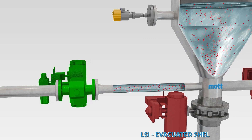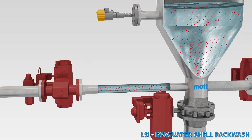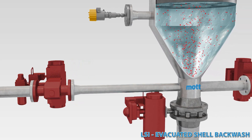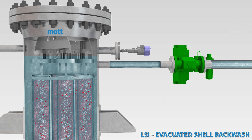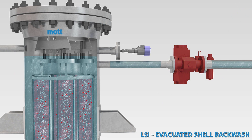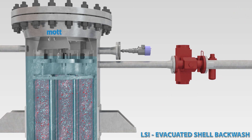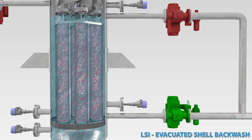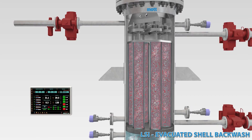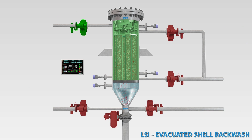To maximize the recovery of filtrate, the evacuated shell backwash may be configured. The vessel is isolated from process inlet and outlet lines. Filtrate is drained through the lower shell drain connection. Pressurized clean gas is charged to the filter vessel shell until the backwash pressure set point is reached.